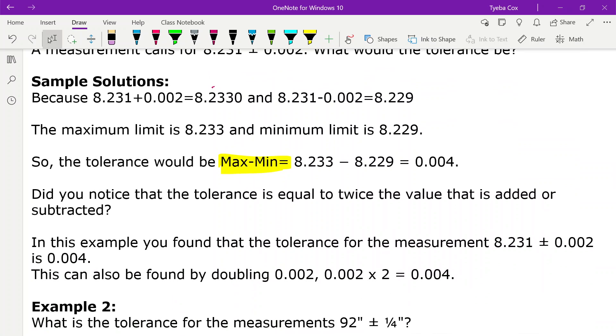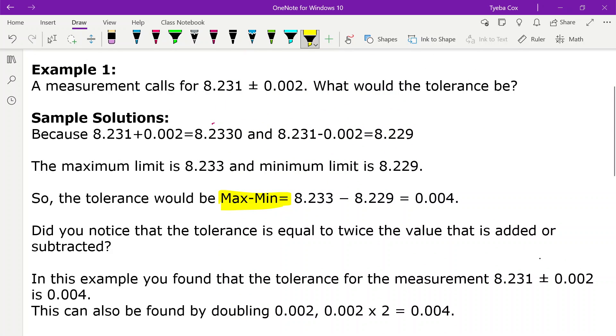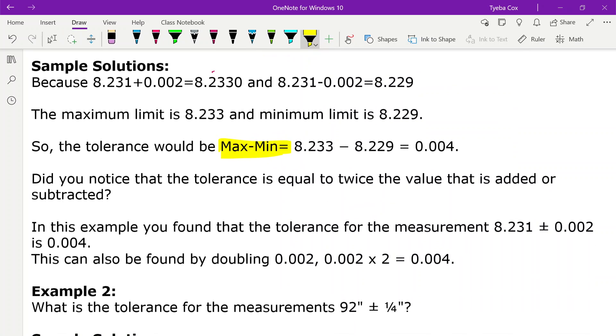So did you notice that the tolerance is twice the value that is added or subtracted? So if we look at this number right here, right here we've got our 0.002. If we take that and just simply double it, so we multiply it by 2,